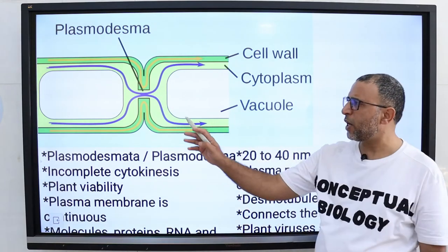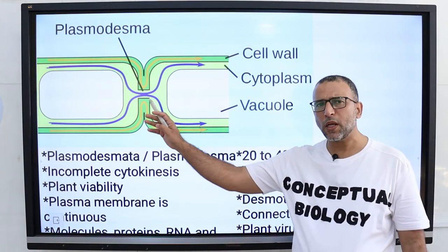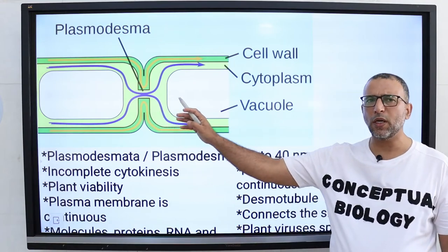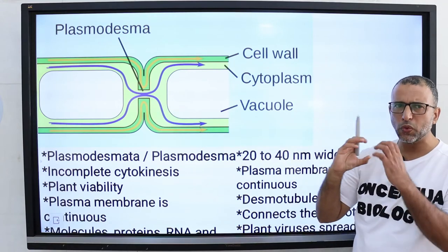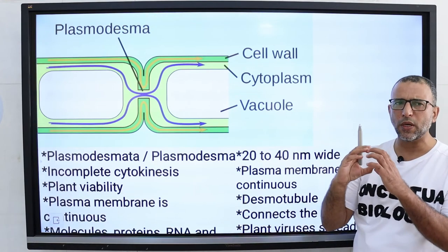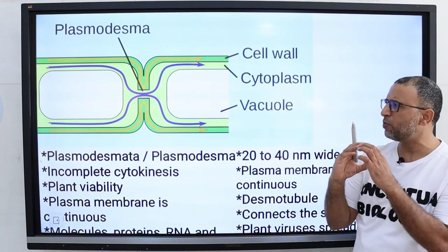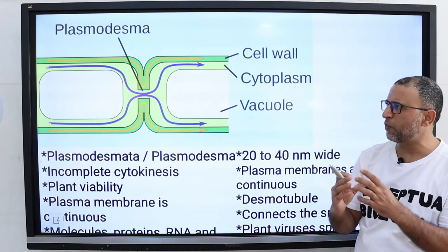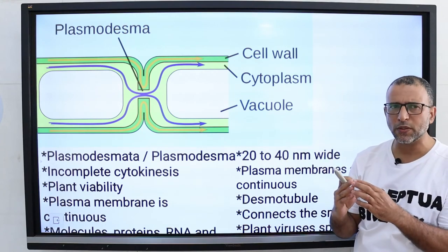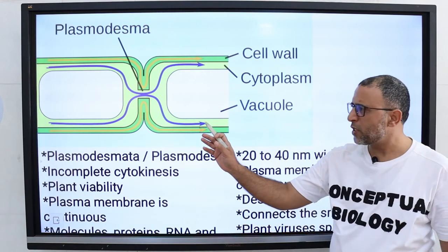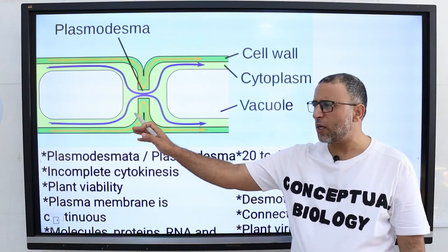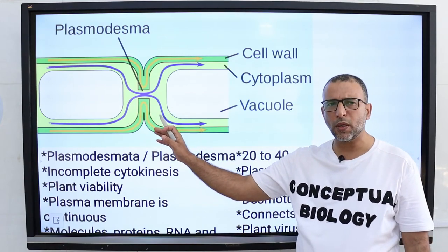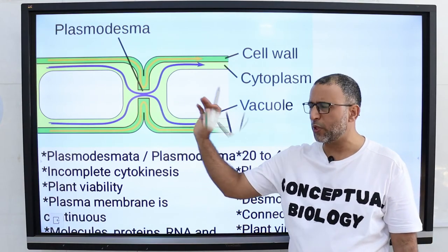Plasmodesmata are channels 20 to 40 nanometers wide that pass through the cell walls of adjacent plant cells, connecting the cytoplasm of neighboring cells. The plasma membranes of adjacent cells are continuous with one another through Plasmodesmata.